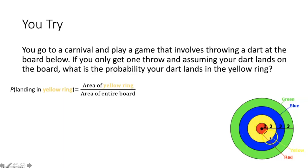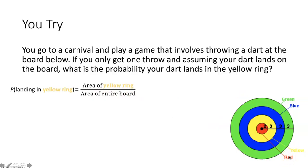The area of the entire yellow circle — including the red circle inside — uses pi r squared, where the radius is 2 plus 3, which is 5. So pi times 5 squared gives the area of the yellow circle. Then subtract the area of the red circle, which is pi times 2 squared. That gives just the area of the yellow ring. The area of the entire board uses pi r squared, where the radius is 2 plus 3 plus 3 plus 3, which is 11. So pi times 11 squared gives the board's area.